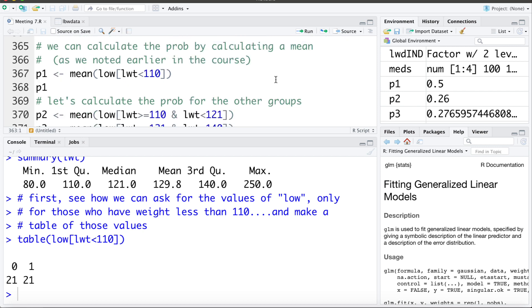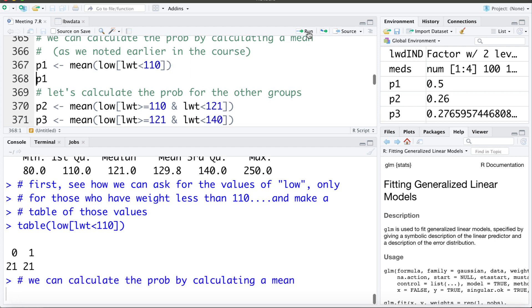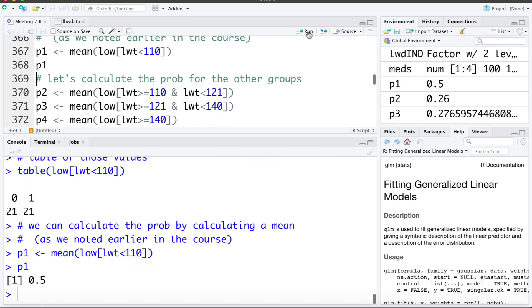Now recall earlier we learned that we can calculate this probability by taking the mean for this variable. So again we're going to ask give us the low birth weights only for those whose weight is less than 110 and give us the mean of those, and store it in something called P1. Now if we look at P1 we can see it's 50 percent. So let's calculate the probability for each of those four groups.